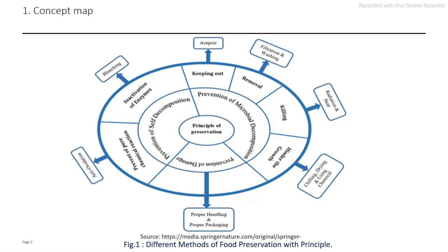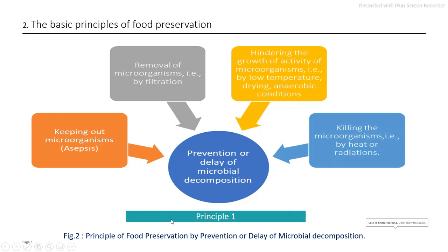In this principle of food preservation there are a number of methods applied to extend the shelf life of food. The first principle is prevention or delay of microbial decomposition of food. In this principle, the first method is by applying heat or radiation treatment to kill whatever microorganisms are present on that food. Second is to reduce the growth of microbial activity by reducing temperature, drying process, and anaerobic conditions. Third is removing microbial load by filtration. And fourth is keeping out microorganisms by using the asepsis technique.